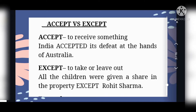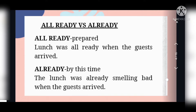The first difference is between 'accept' and 'except'. 'Accept' means to receive something or to agree on something. For example: India accepted its defeat at the hands of Australia. The second, 'except', means to leave out or exclude. For example: All the children were given a share in the property, except Rohit Sharma.